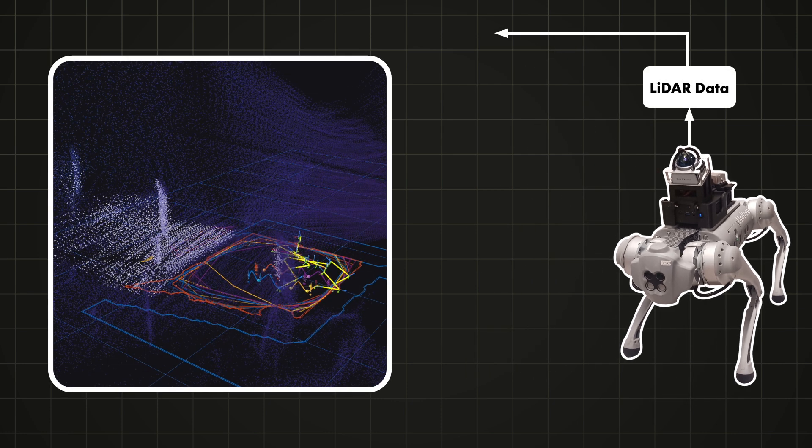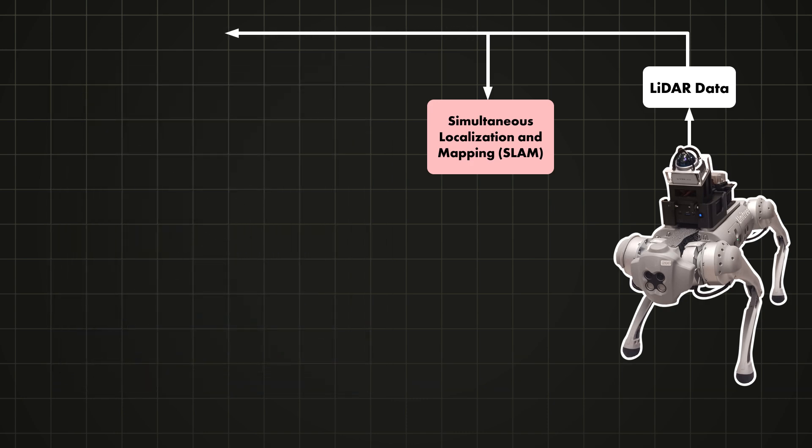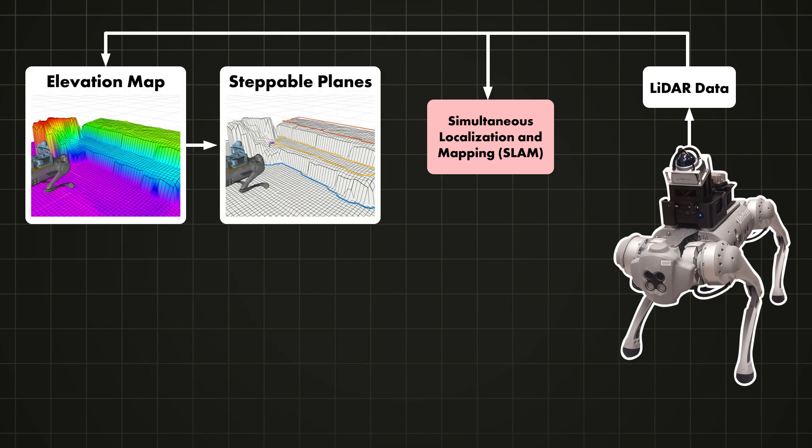The LiDAR data is used to map the environment and keep track of the robot's location using a process called SLAM. But we also convert this data into an elevation map, which is then filtered and segmented into planes which represent the areas where the robot can step.